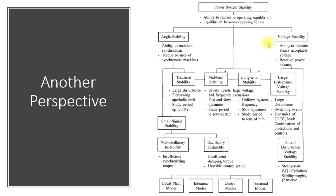If following a disturbance, voltages remain within permissible limits, it means that we have achieved voltage stability. These stabilities can be either large disturbance, transient, midterm, or long term. Transient stability refers to large disturbances or three-phase faults close to the generator — something very swift that can happen to the system. Large disturbance voltage stability involves a single line-to-ground fault or three-phase fault on the load side causing huge variation in voltages.